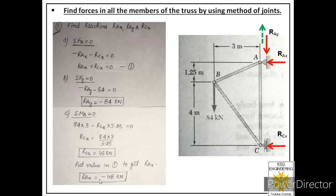The negative value for RAX means the direction assumed at the start is not correct — it is actually acting towards the right. So in coming calculations we have to consider RAX acting towards the right.